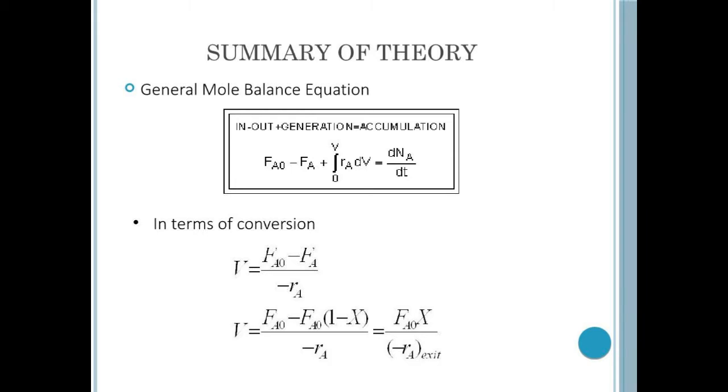The formula is denoted as FA0 minus FA plus the integration of rA dV equals to dNA/dt. On the other hand, in terms of conversion, the volume is equal to FA0 minus FA over negative rA. And in terms of derivation we get FA0 divided by negative rA at the exit.